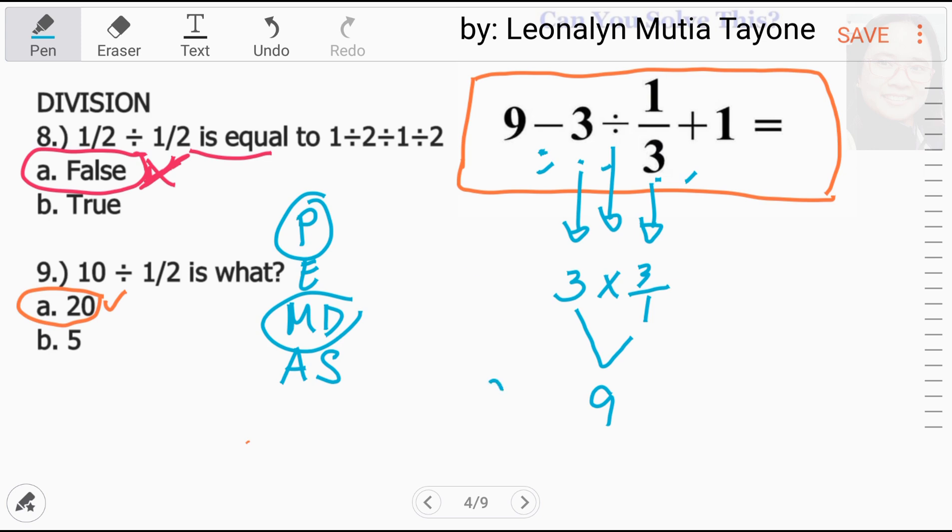Ngayon, kopyahin. 9 minus 9 plus 1. Kung sakaling tama kayo sa first part dito, maraming nagkakamali nito. Kasi, ang nauna dito ay subtraction. Yung iba na ang akala nila ay, yung akala nilang M-das. Pag sinabing M-das, addition lang talaga unahin nila.